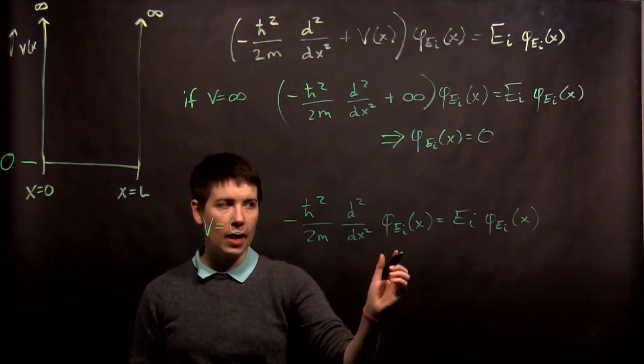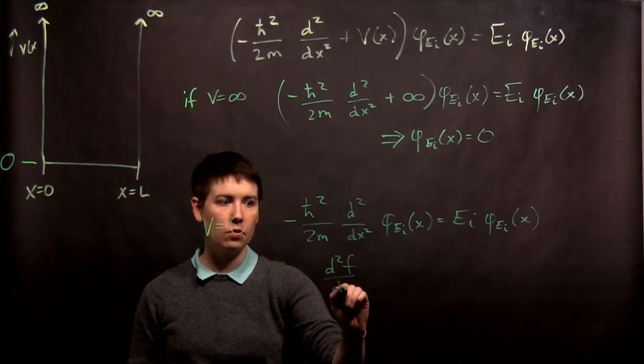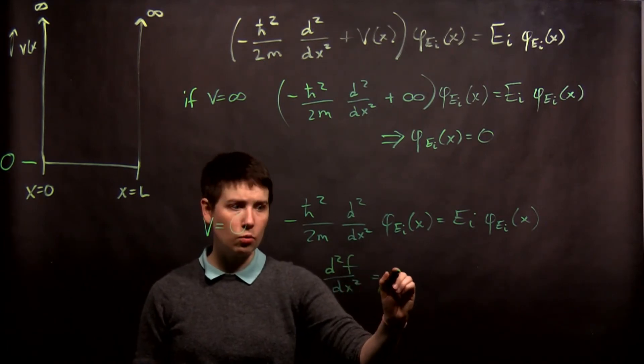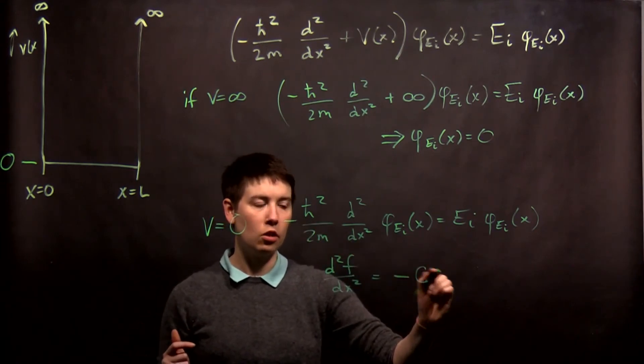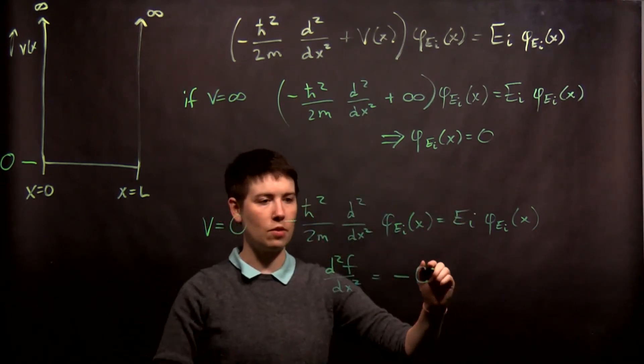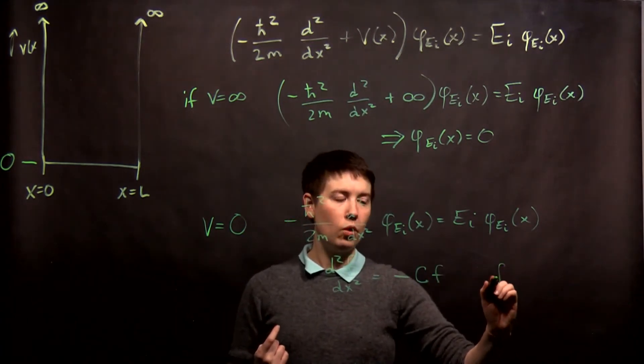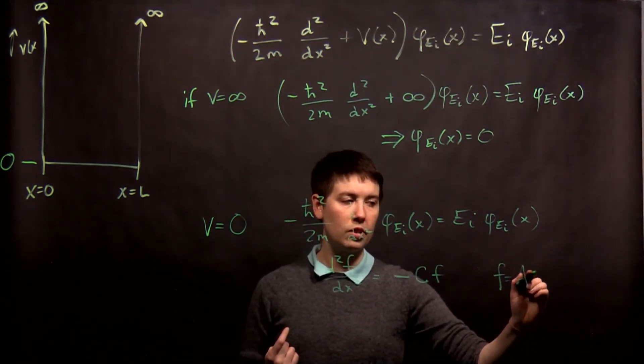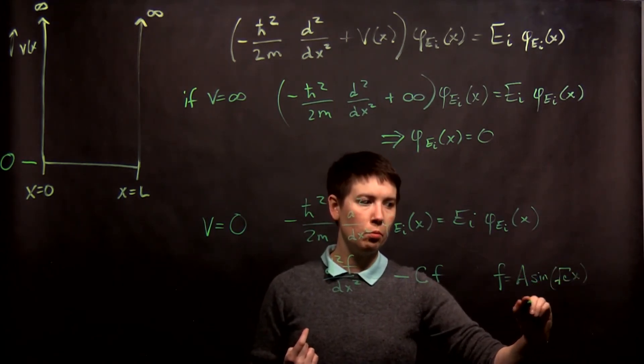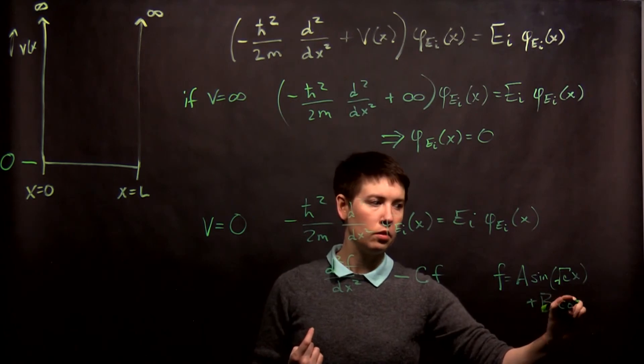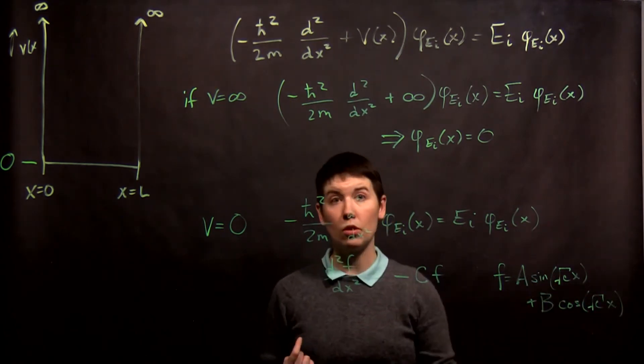So we saw that in fact, this is the same form as d squared f dx squared equals some negative, notice that negative sign, coefficient, which is a big messy thing, of f. And when does that happen? That works when f is equal to sine, square root of c, plus cosine, square root of c. So we have sines and cosines.